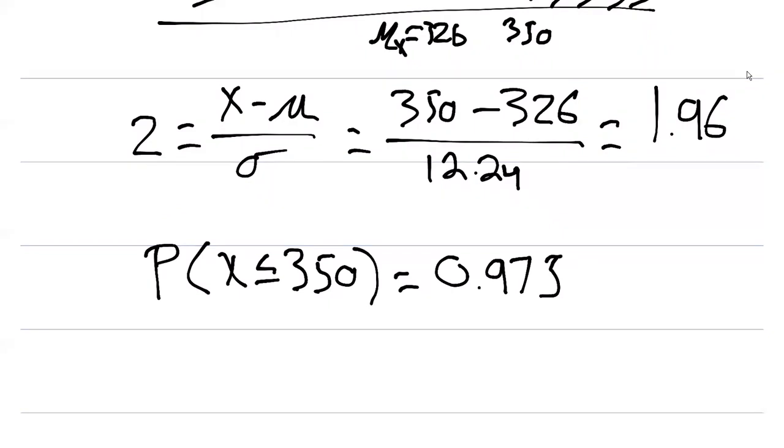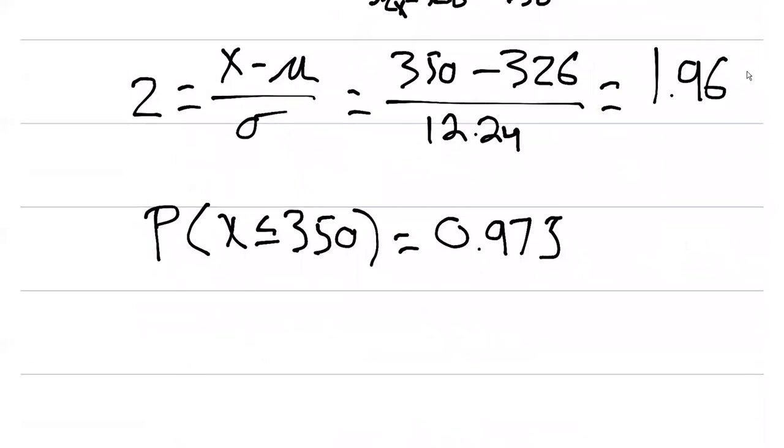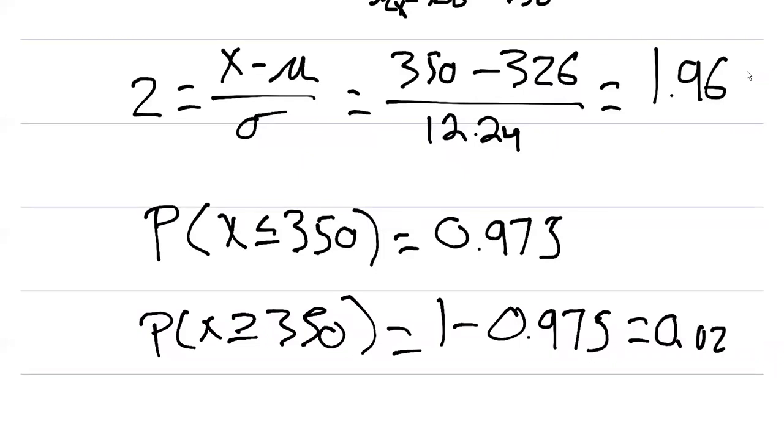But now remember we're not interested in everything less than 350. We're interested in everything greater than 350, everything to the right side of 350. So what we can do then is calculate the complement of this probability. So to do that we can find the probability that x is greater than or equal to 350 as one minus that probability, or instead of 0.975 the complement of that would be 0.025.